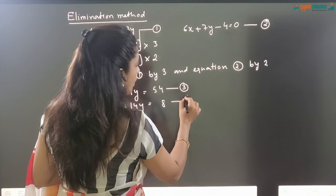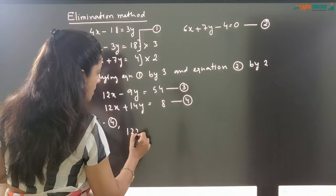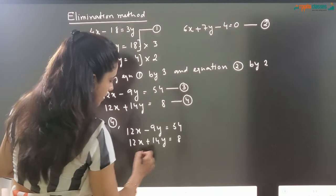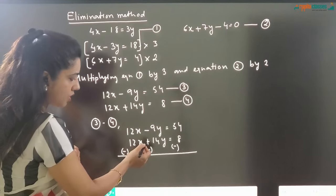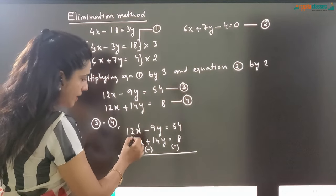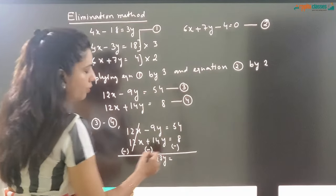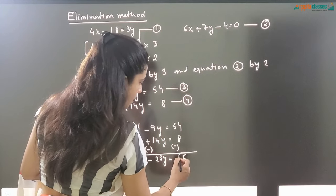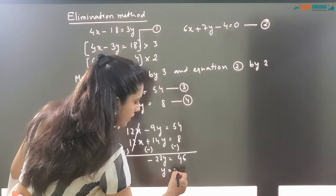Now we do equation 3 minus equation 4, subtracting equation 4 from equation 3. Write the two equations: 12x minus 9y equals 54, and 12x plus 14y equals 8. When you subtract, change all signs of the second equation. So 12x minus 12x cancels. Minus 9y minus 14y gives minus 23y. On the right side: 54 minus 8 equals 46. So minus 23y equals 46, therefore y equals 46 divided by minus 23, which is minus 2. We get the value of y as minus 2.